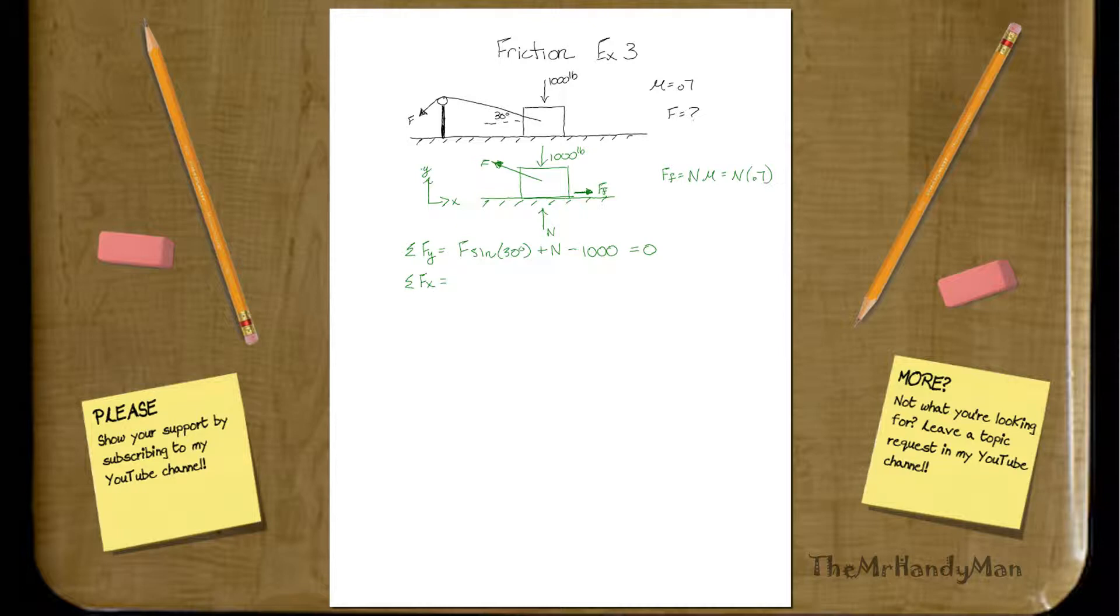Force in the x direction, we'll find that is negative force cosine 30 degrees, plus the force of friction, will equal 0.